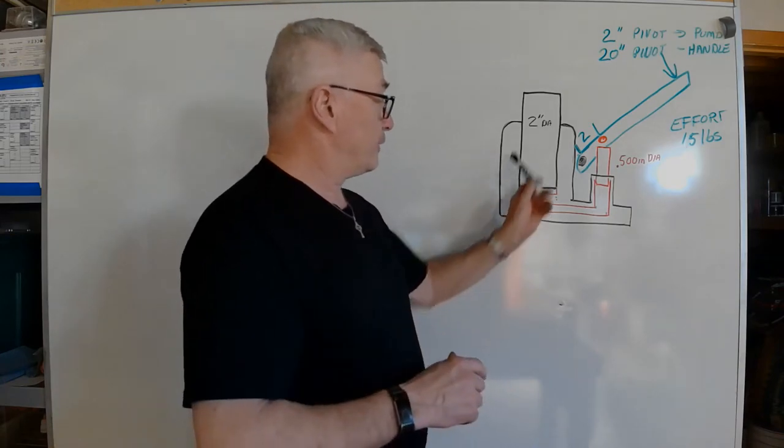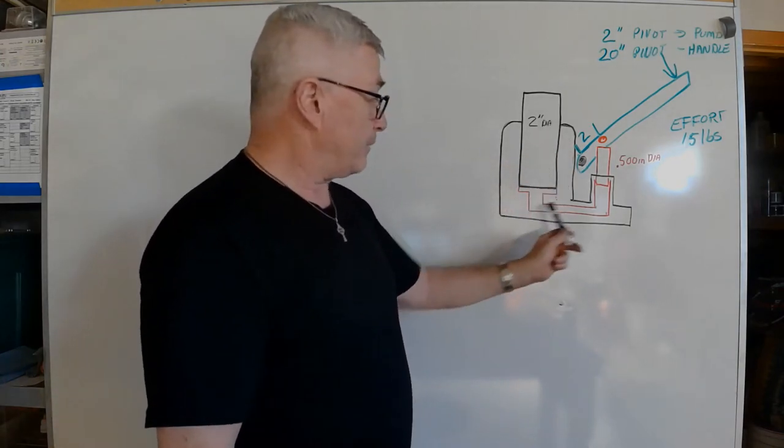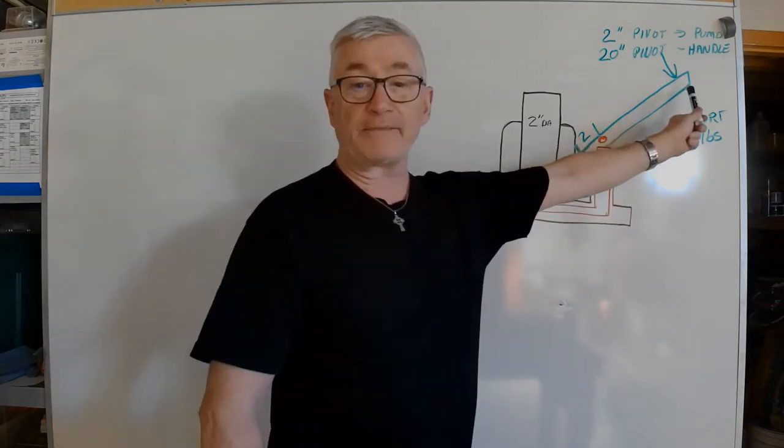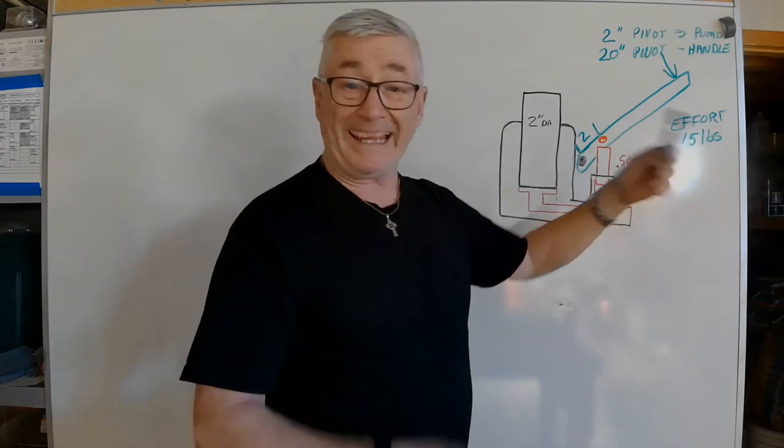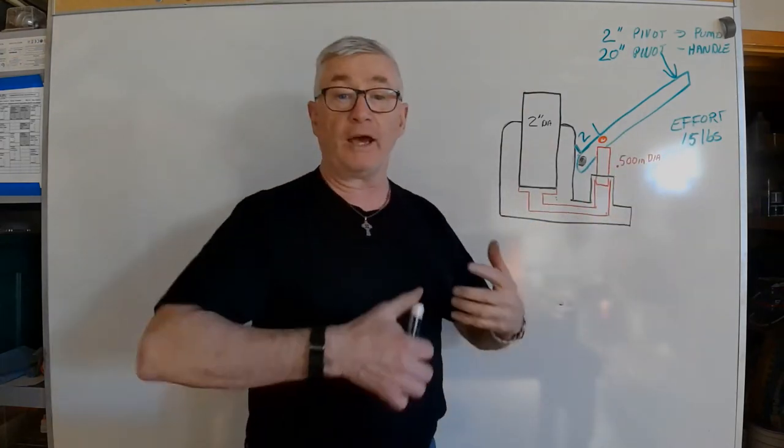I've color coded this so that the black is my two-inch piston, the red will be where we generate pressure in the pump, and the green is my handle. When I get to the end, I'll put a boom on this and we'll look at what we would do if it was on an engine crane where it would be a third class lever.